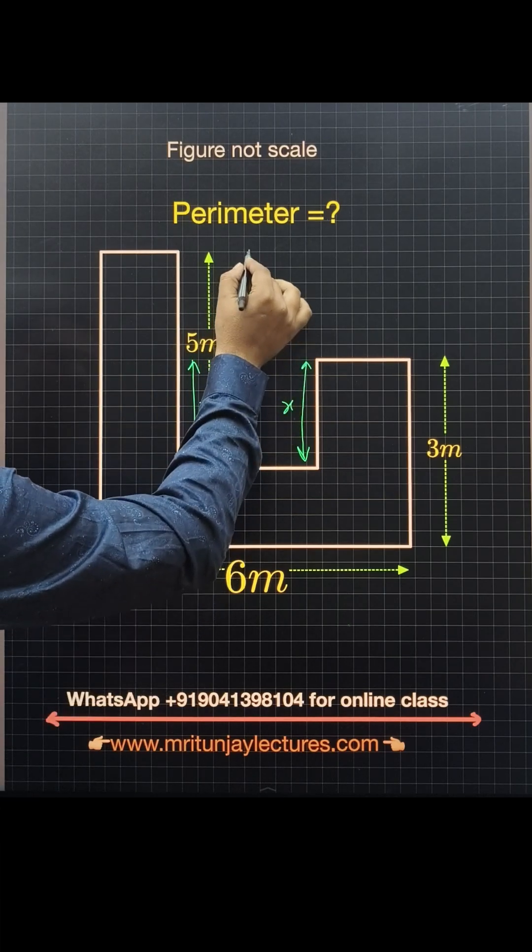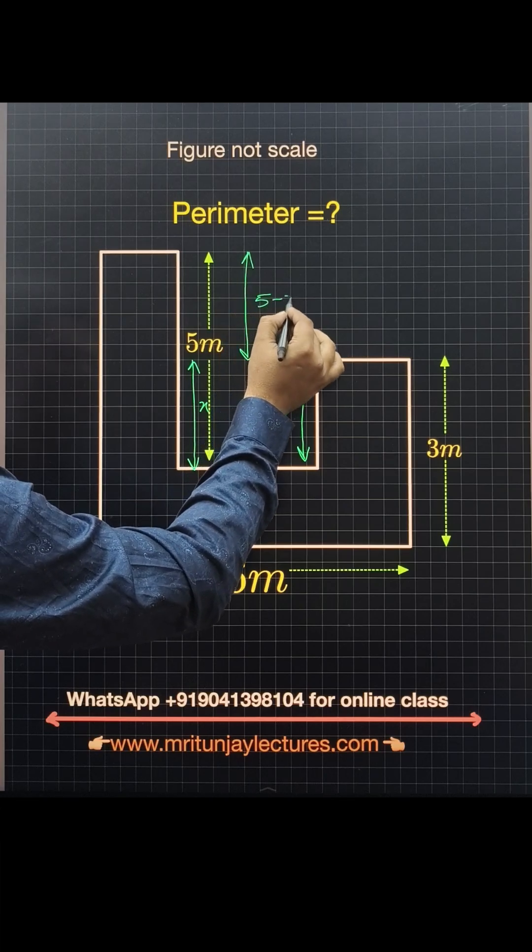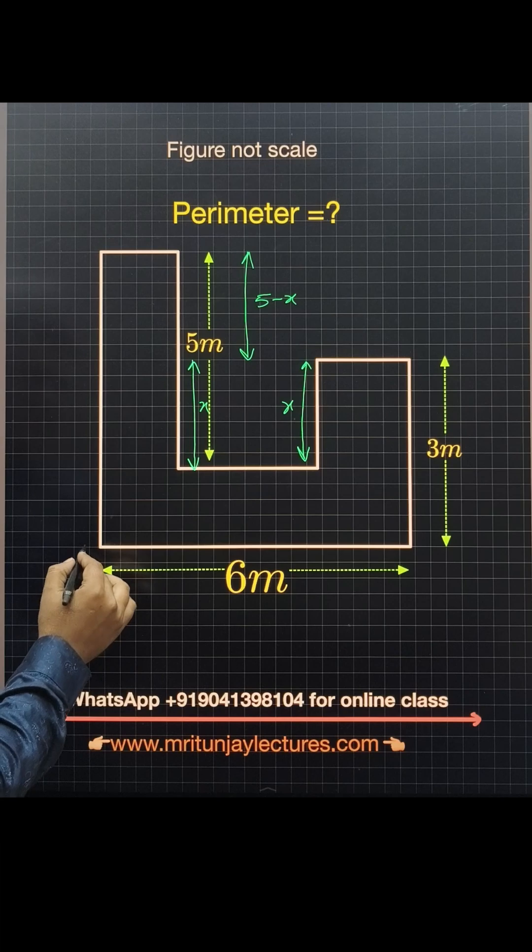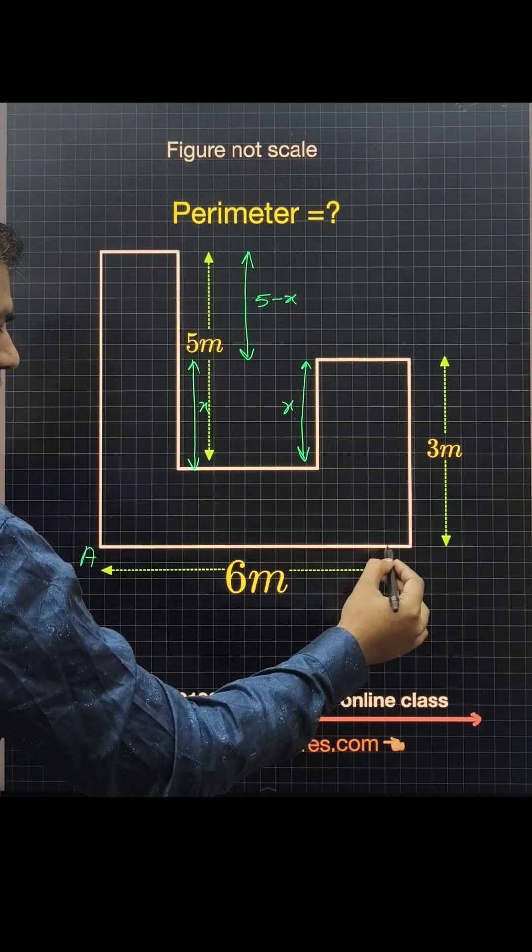That distance you can say is 5 minus x, clear? So perimeter means sum of all outer sides.